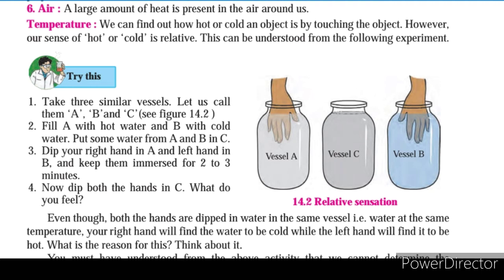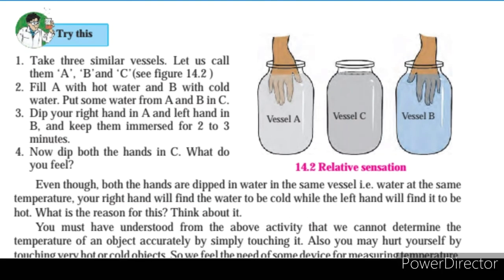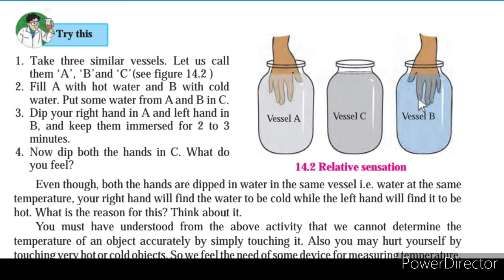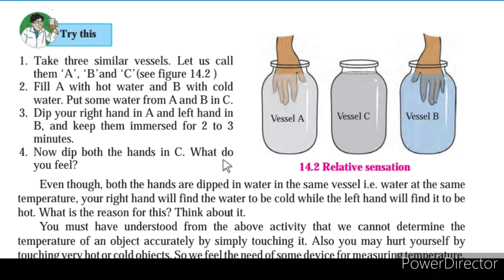We can find out how hot or cold an object is by touching it. However, our sense of hot or cold is relative. In an activity, three vessels A, B, and C are taken. Vessel A has hot water, vessel B has cold water, and vessel C has a mixture of water from A and B. When we dip our hands in vessel C, we feel that C is colder than A but warmer than B. This shows that the sensation of heat is relative.